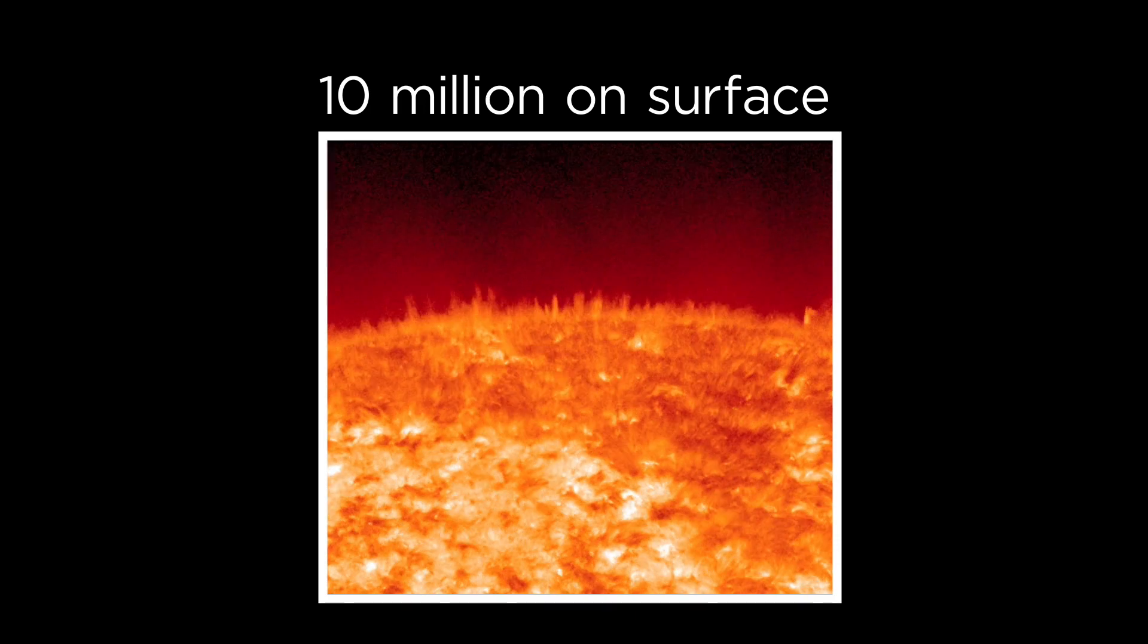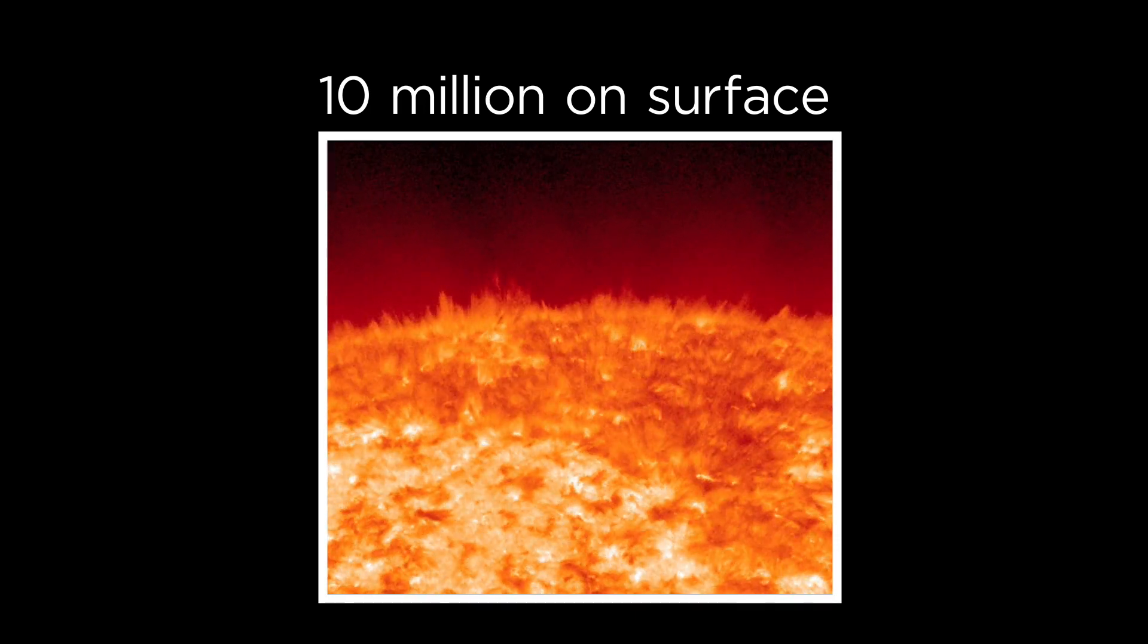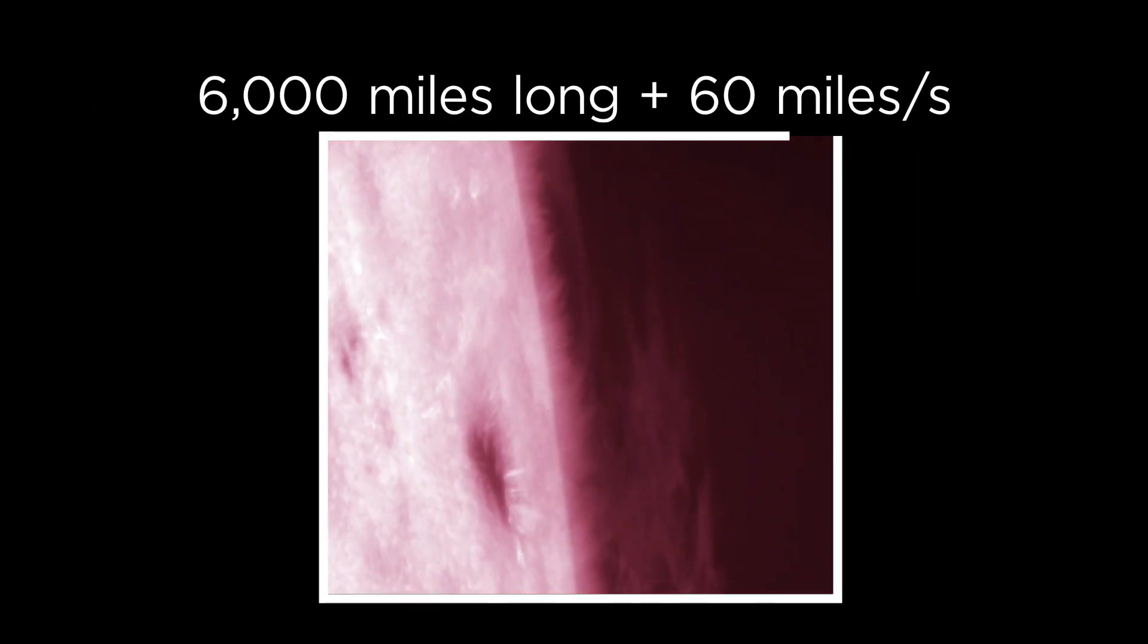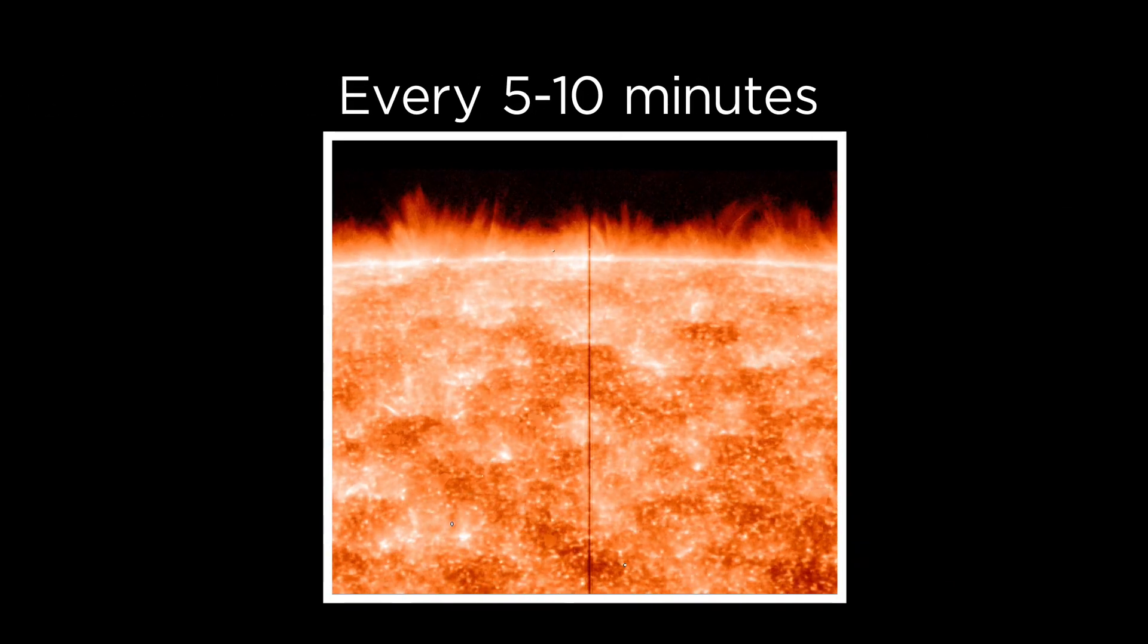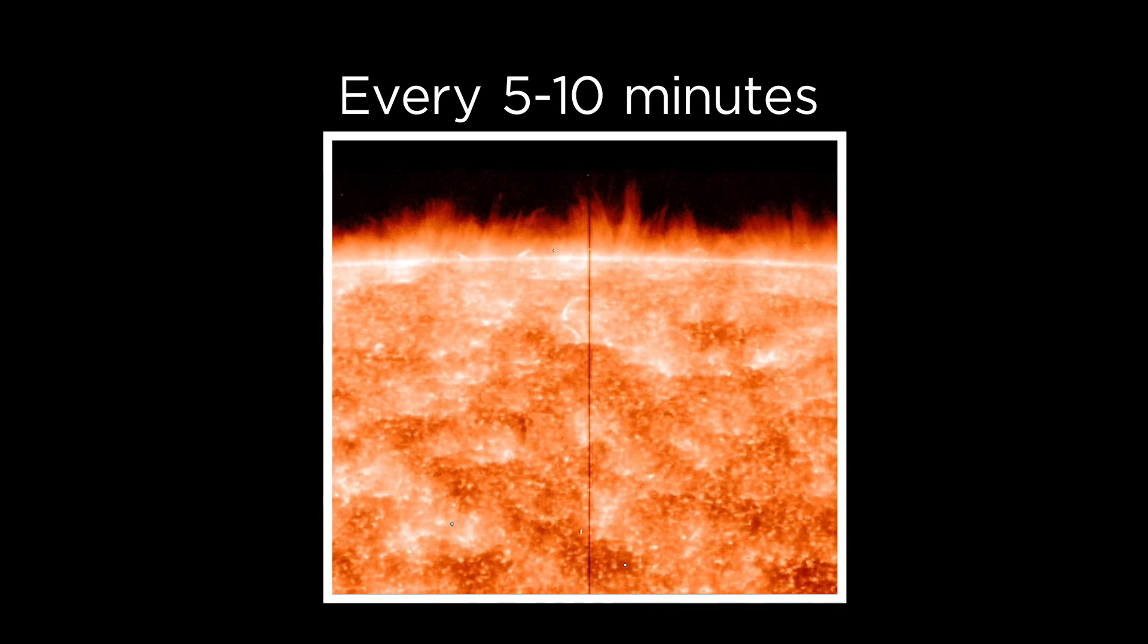There are roughly 10 million spicules on the surface at any given time. They can grow up to 6,000 miles long and jet off the sun at 60 miles per second. Each one appears and collapses over the course of 5 to 10 minutes.